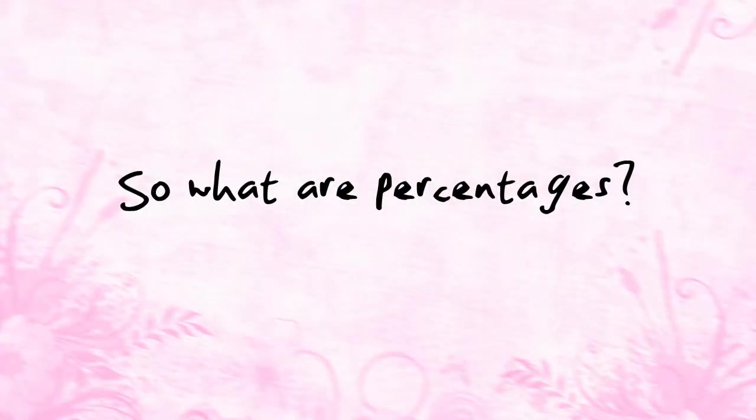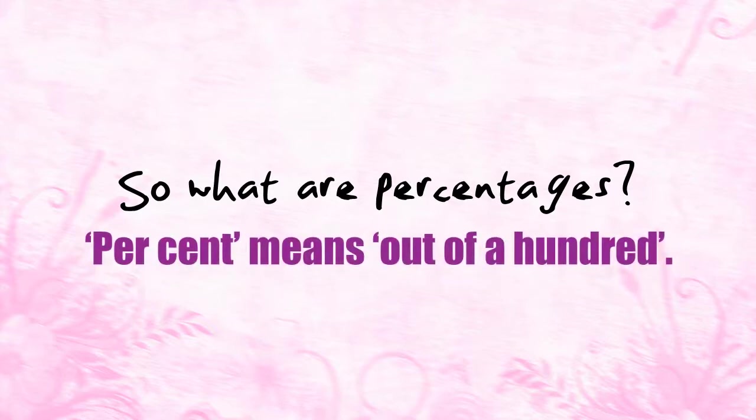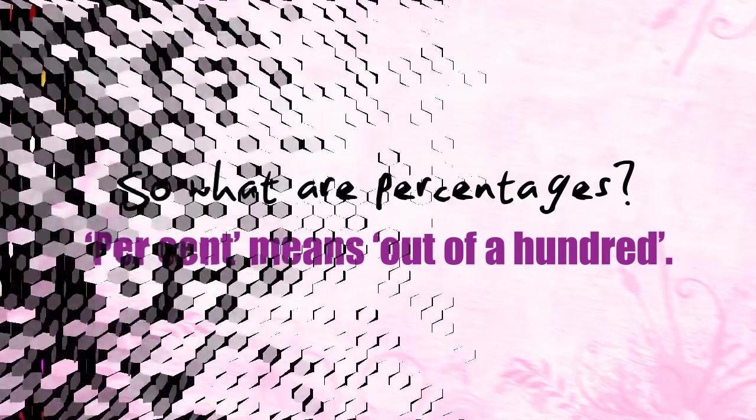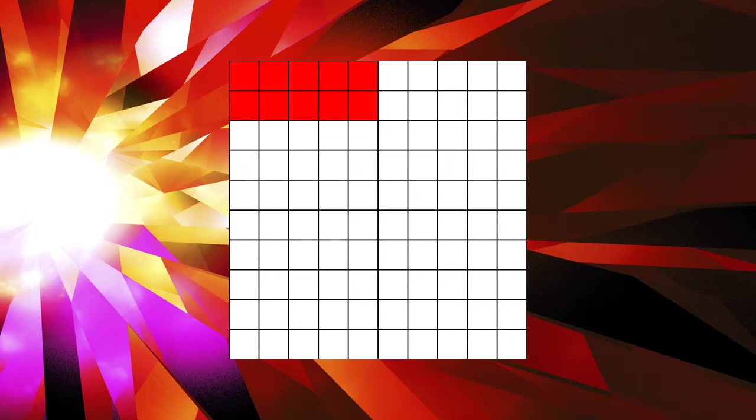So what are percentages? Well, the word percent means out of a hundred, and in its simplest form this is what a percentage is — it's a number out of a hundred. So if you had a grid made up of a hundred squares and shaded ten of those squares red, then ten percent of your grid is now red.